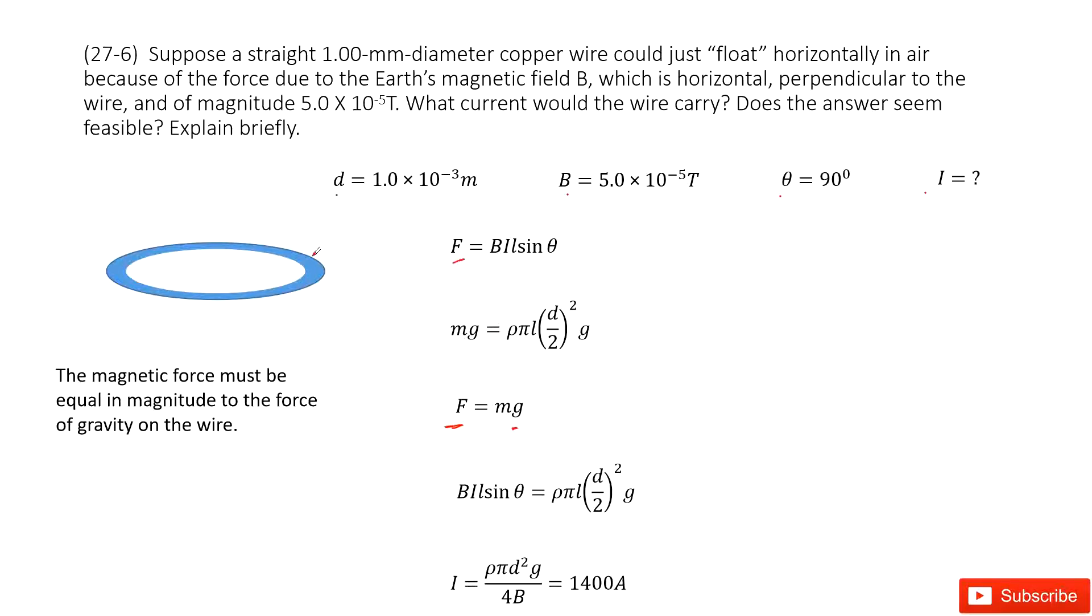And then we need to find the gravity for this wire. So we can write the density times volume times g. So pi r squared is the cross sectional area. L is the length of this wire. So this is volume.